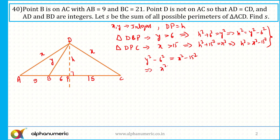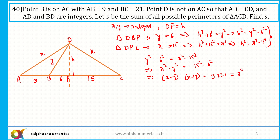Rearranging: X² minus Y² equals 15² minus 6², which equals (15 minus 6)(15 plus 6) equals 9 × 21 equals 189. Factorizing further, 189 equals 3³ × 7. So (X minus Y)(X plus Y) equals 189. Since X plus Y is greater than X minus Y, I need to write 189 as a product of two factors in all possible ways.